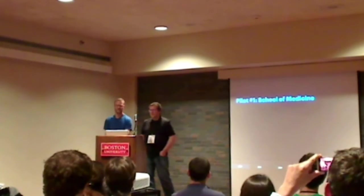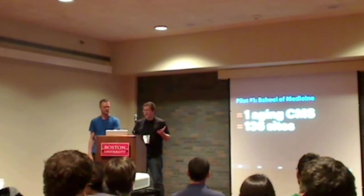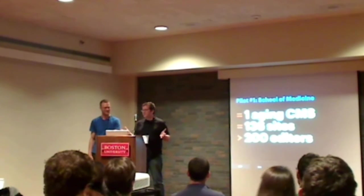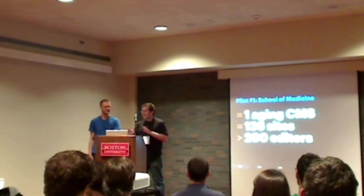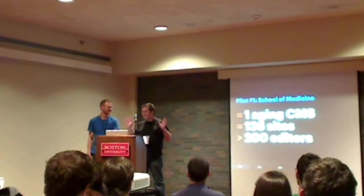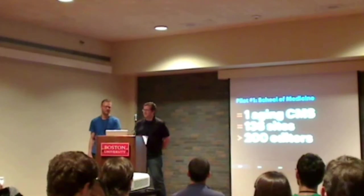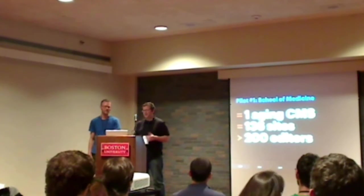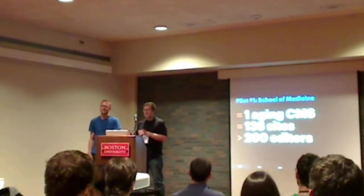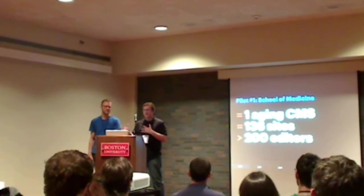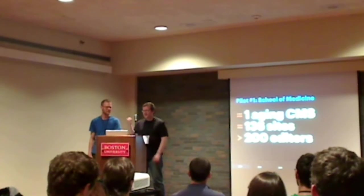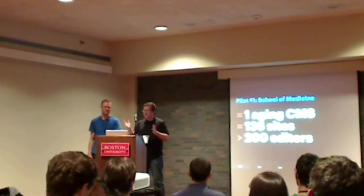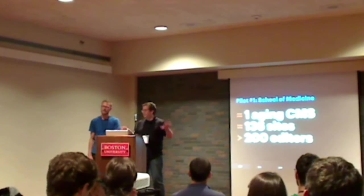Then IS&T came along. The medical campus had an aging CMS with 136 sites in it — pre-HTML5, ASP, all tables, lots of table layout, all kinds of bizarre ways of constructing pages. They had over 200 editors, and the task was with a really minuscule budget — around $50,000 — to migrate all this content into a new CMS. Because of the small budget, a decision was made to go open source and we chose WordPress. It just happened that the design team was also interested in WordPress, so even though the two groups were pretty separate, we zeroed in on this one product.